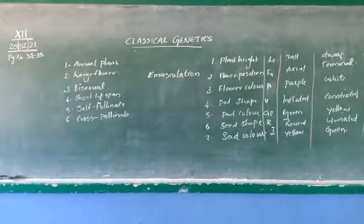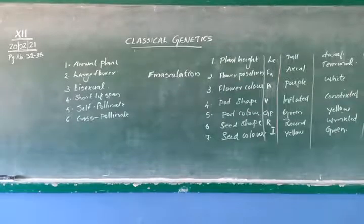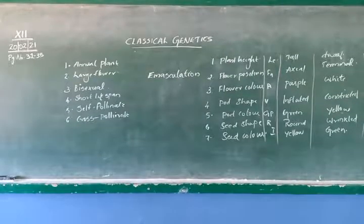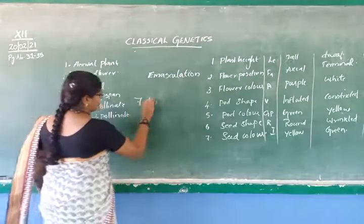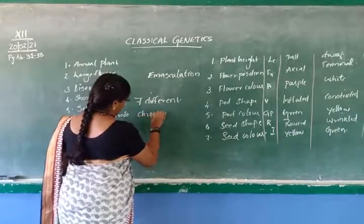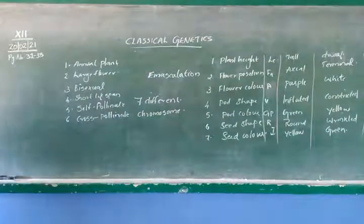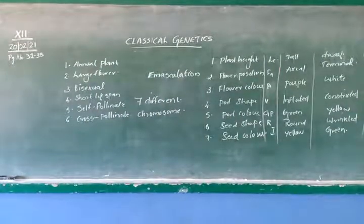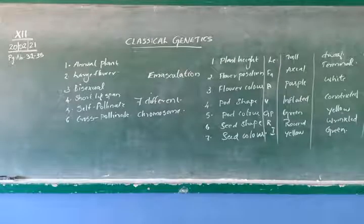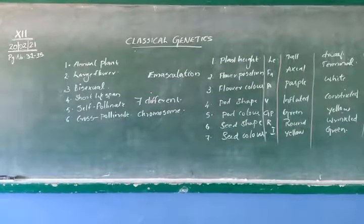How many characters did Mendel take for his experiment? Seven. These seven different characters are present in seven different chromosomes, which helped Mendel the most to succeed in his experiment. You have to memorize these seven different characters, their contrasting forms, and the genes responsible for their expression.